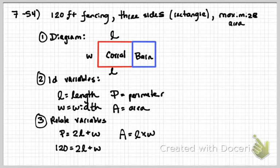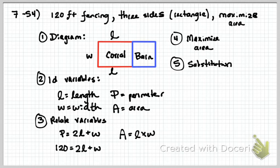Our fourth step is to ID the variable we need to solve. And we are trying to maximize area. And the fifth step is going to be using substitution. So if you look at our equations, the two equations we have constructed that are going to be helpful are these two.